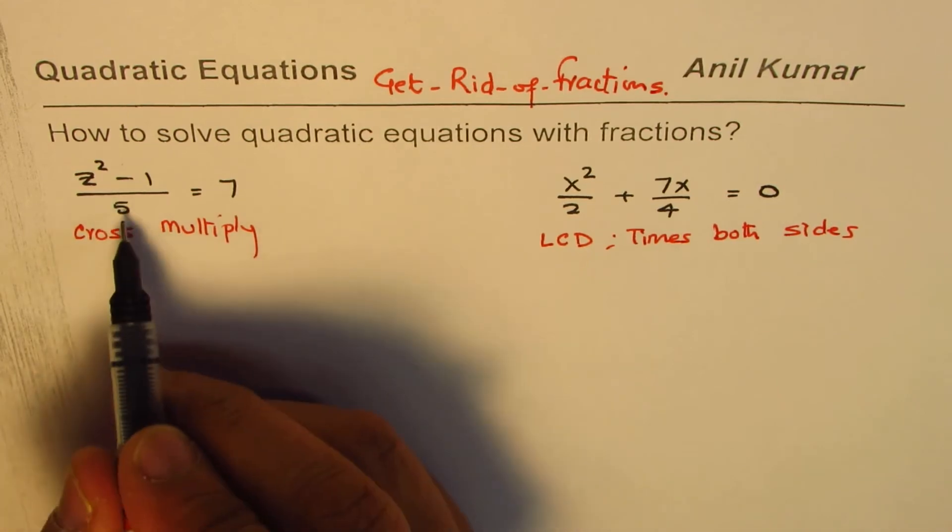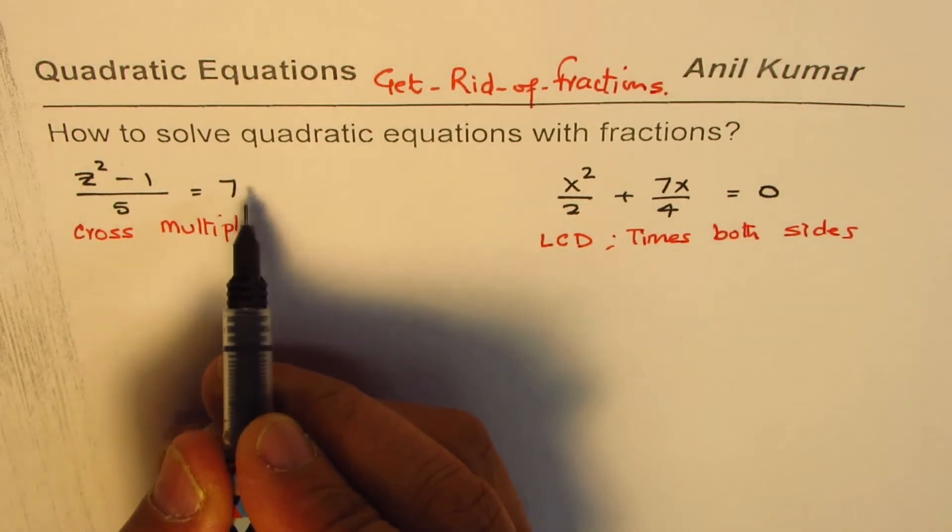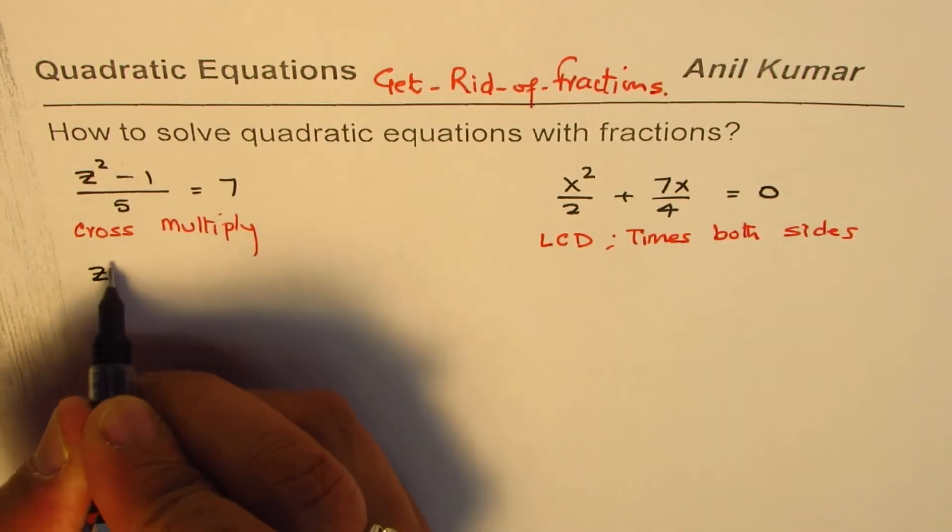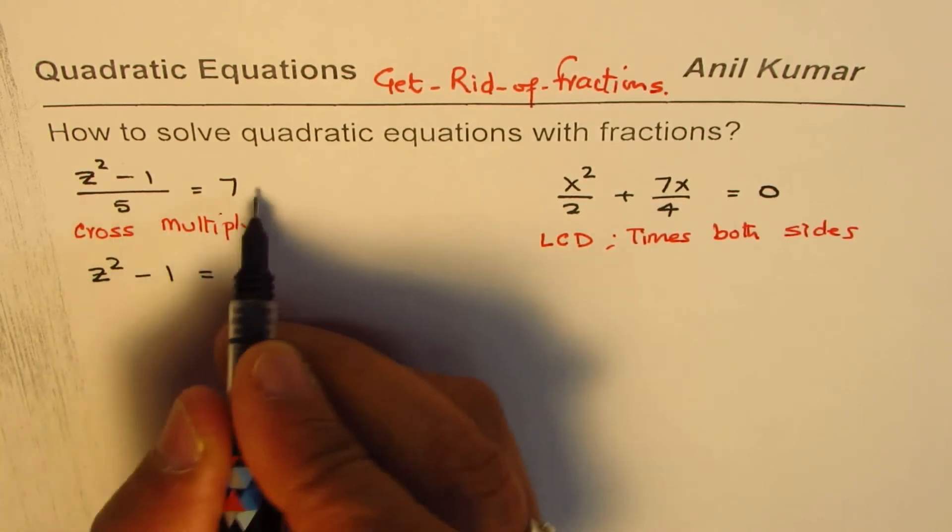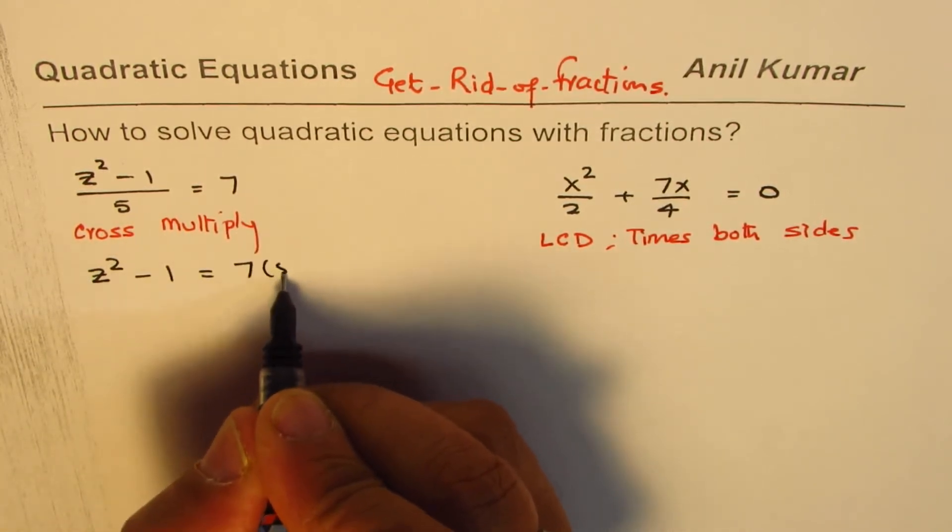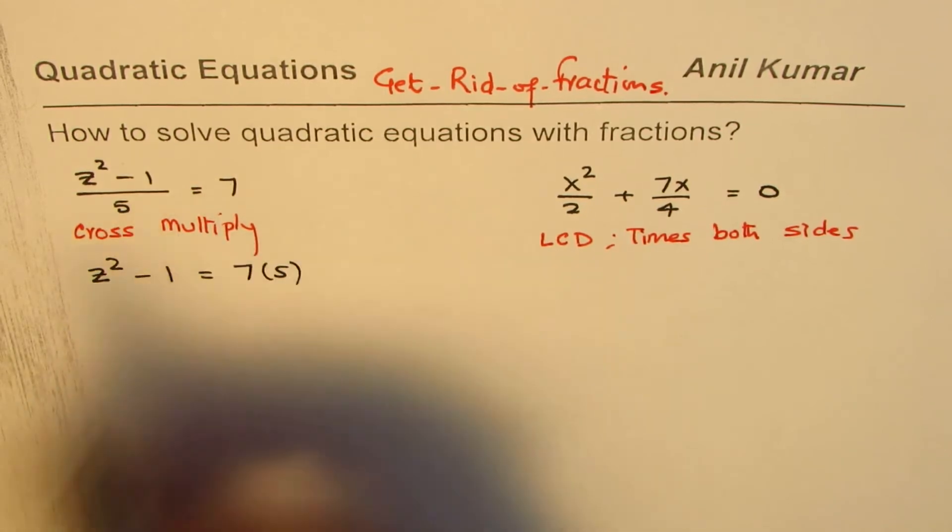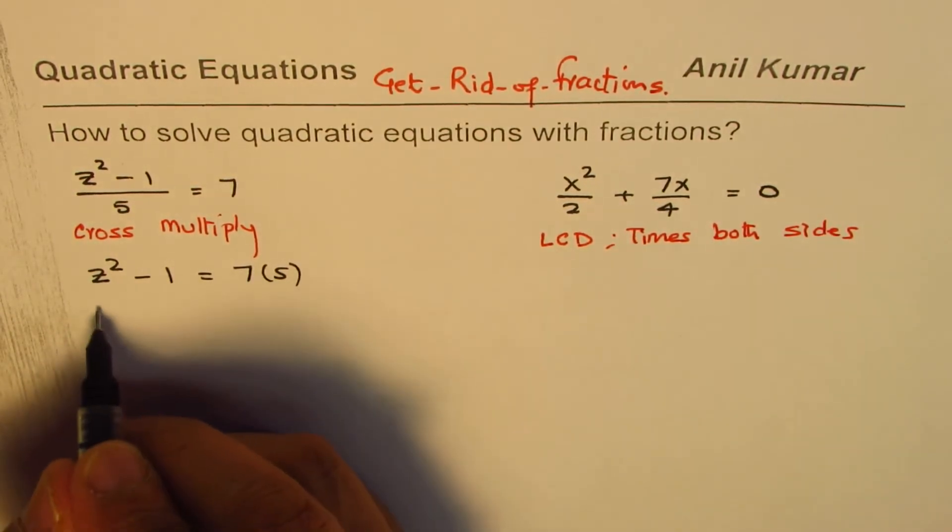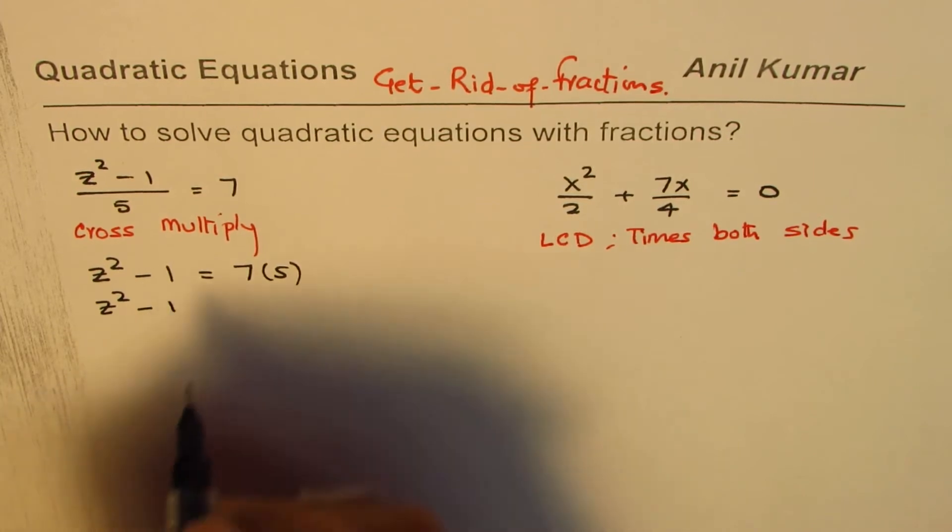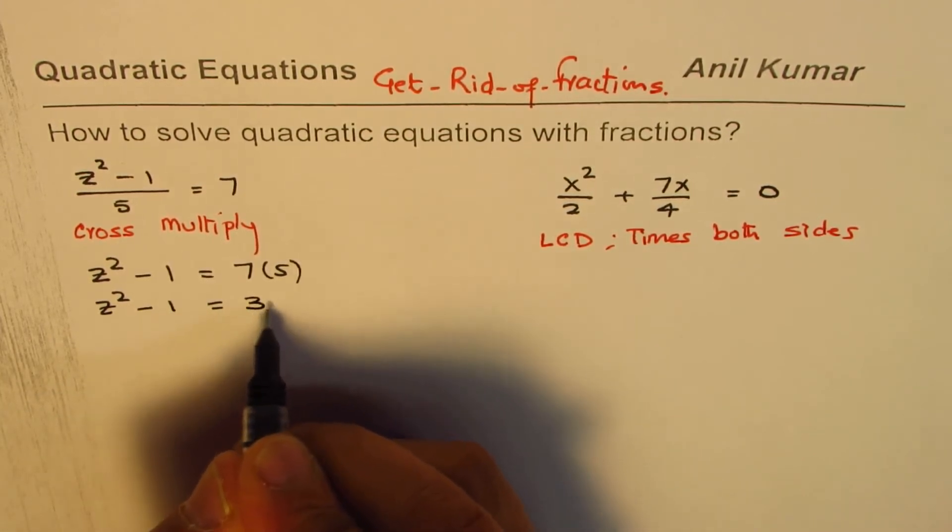Now what do you get? 7 times 5 is 35 and you are left with z squared minus 1 on the left side and 7 times 5. So let me write 7 times 5 in the bracket first. So that is the first step. Now we could write this as z squared minus 1 equals to 35.